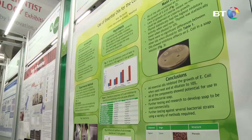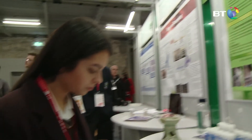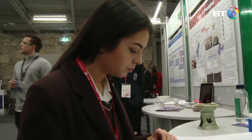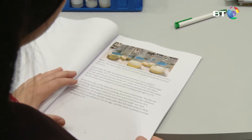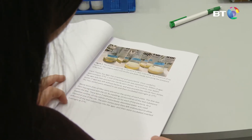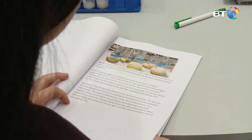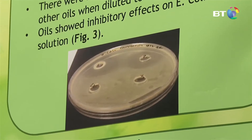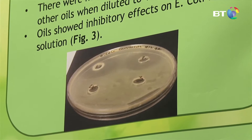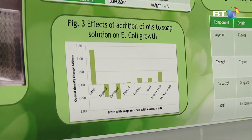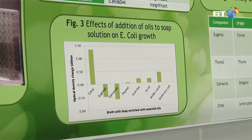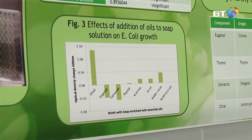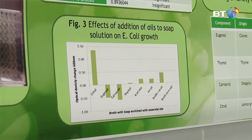To develop my soap I used a broth dilution method, where I found the optical density before and after incubation with the oils. The more dense the liquid, the more bacteria present, so I was seeing if the optical density decreased — this showed that the oils did have an inhibitory effect on growth.